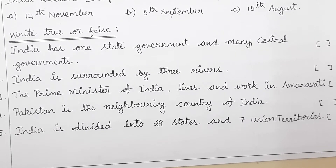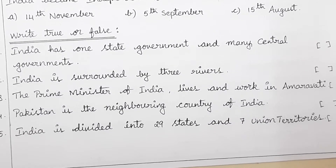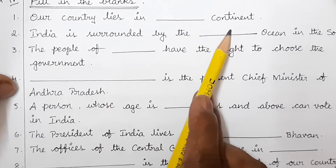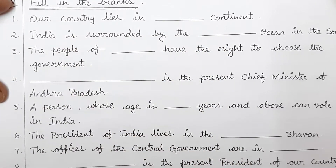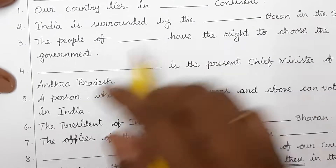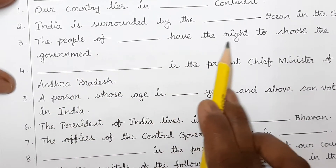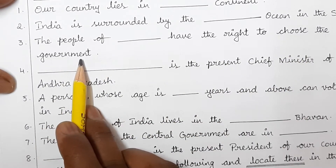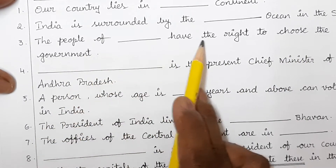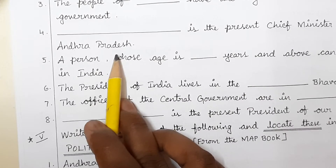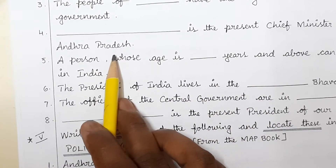Now come to the second part — fill in the blanks. 'Our country lies in the dash continent' — is it European, Asian, or Australian continent? 'India is surrounded by the dash ocean in the south' — which ocean? 'The people of dash have the right to choose the government.' Next: dash is the present Chief Minister of Andhra Pradesh — write the person's name.